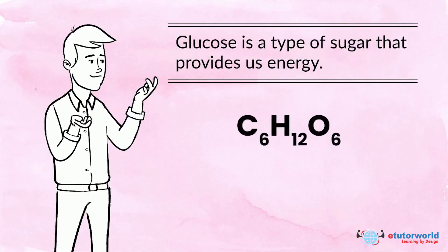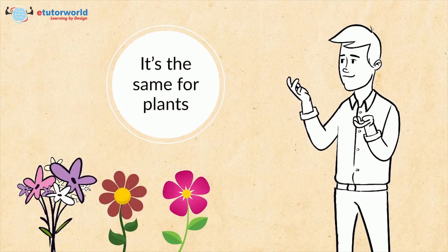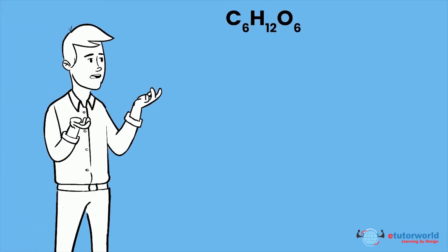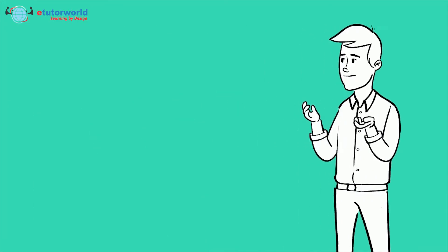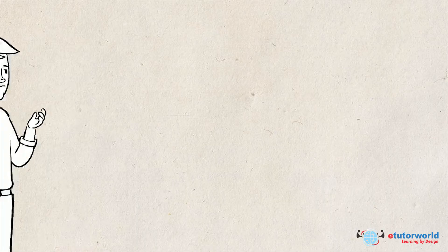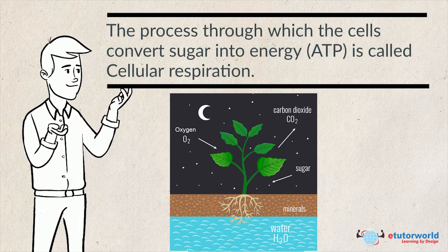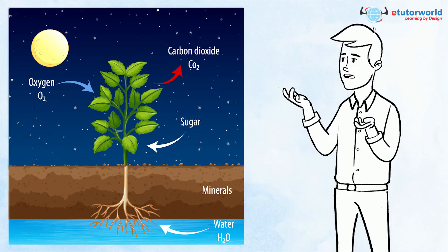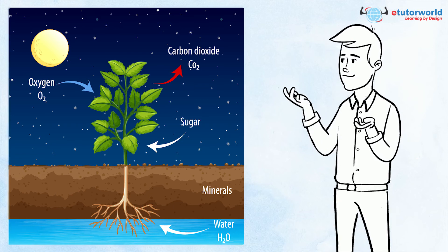Glucose is a type of sugar that provides us energy. It's the same for plants. Glucose is needed by all forms of life to produce energy and is an essential part of our food. The process through which cells convert sugar into energy is called cellular respiration. During respiration, the chemical energy stored in glucose is converted into other forms of energy, such as mechanical energy or thermal energy.